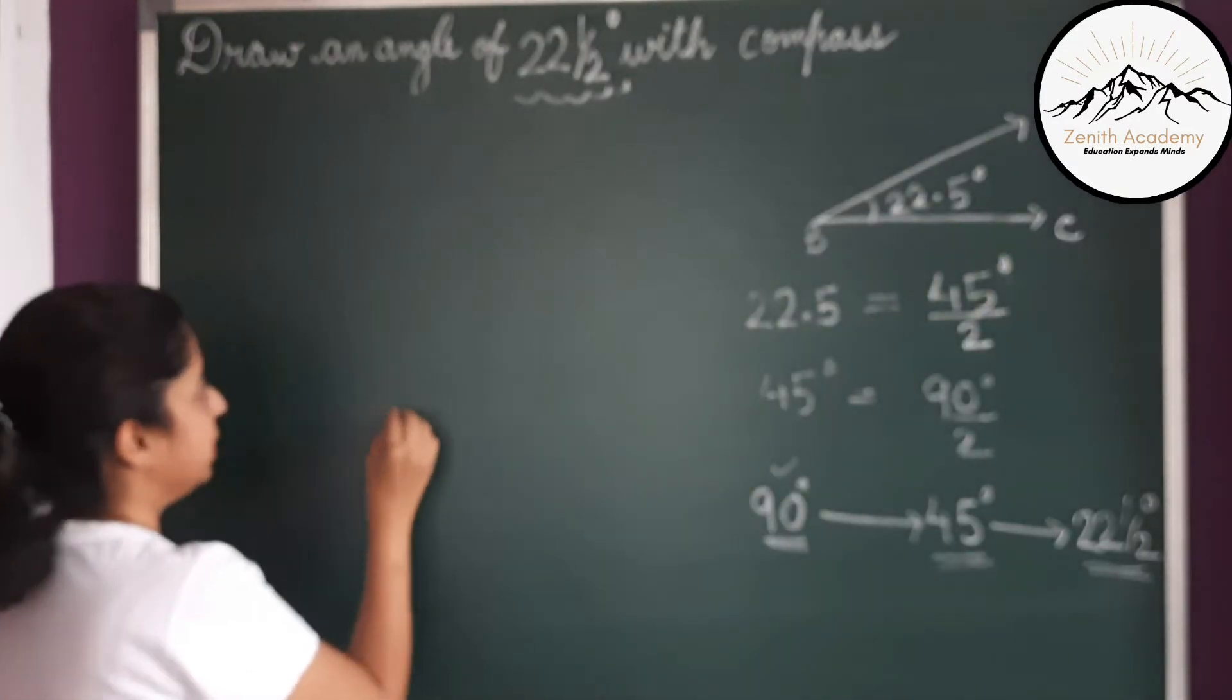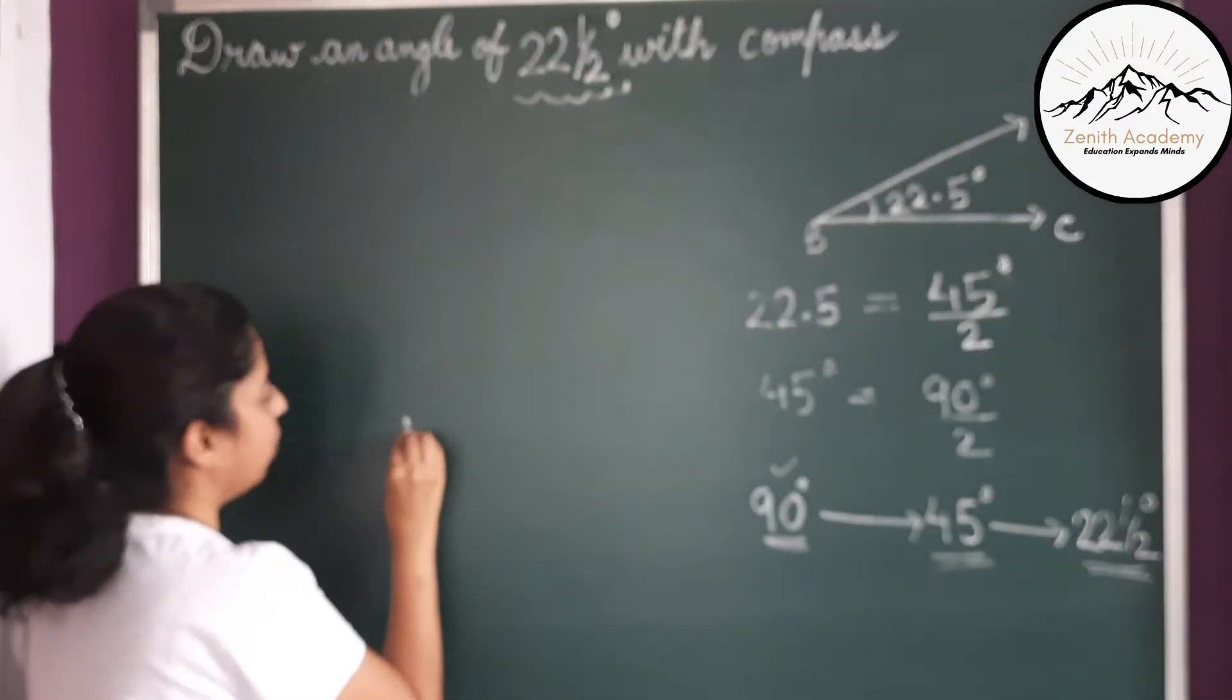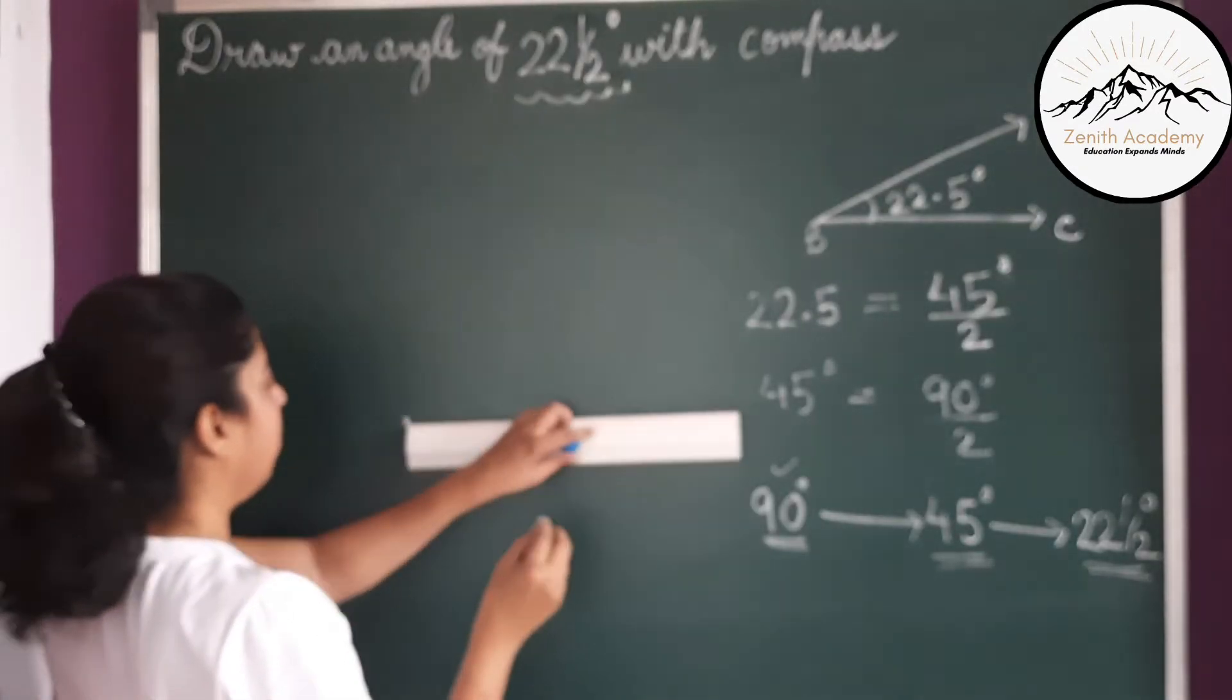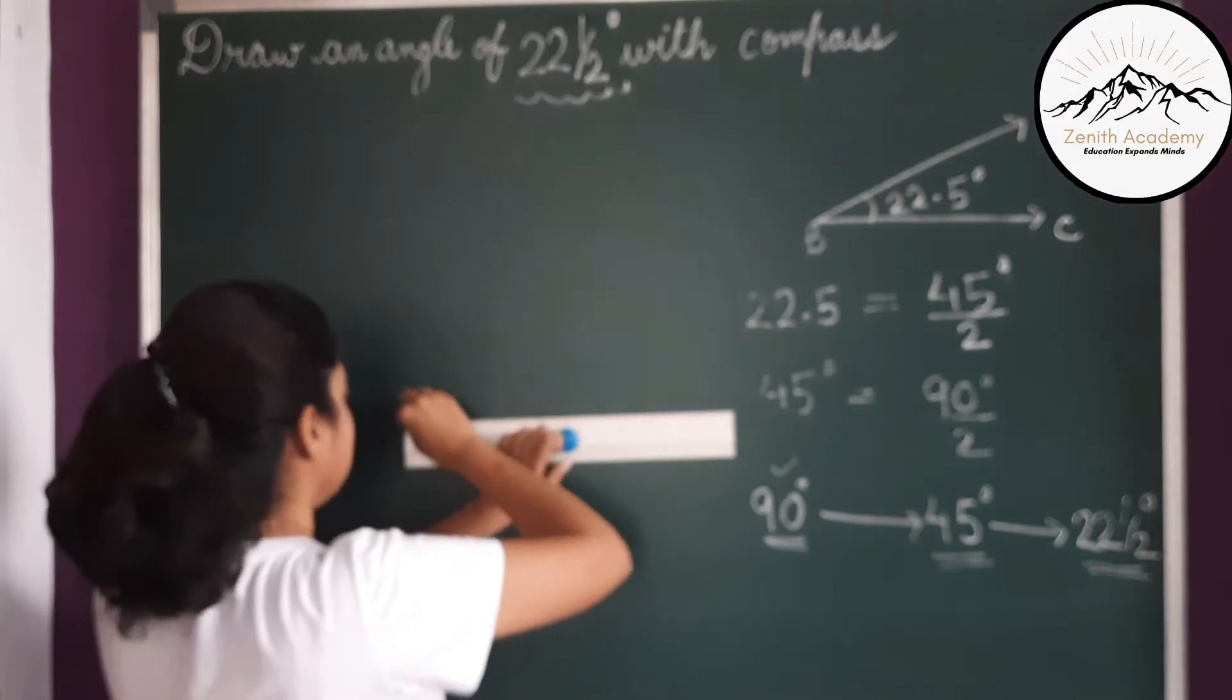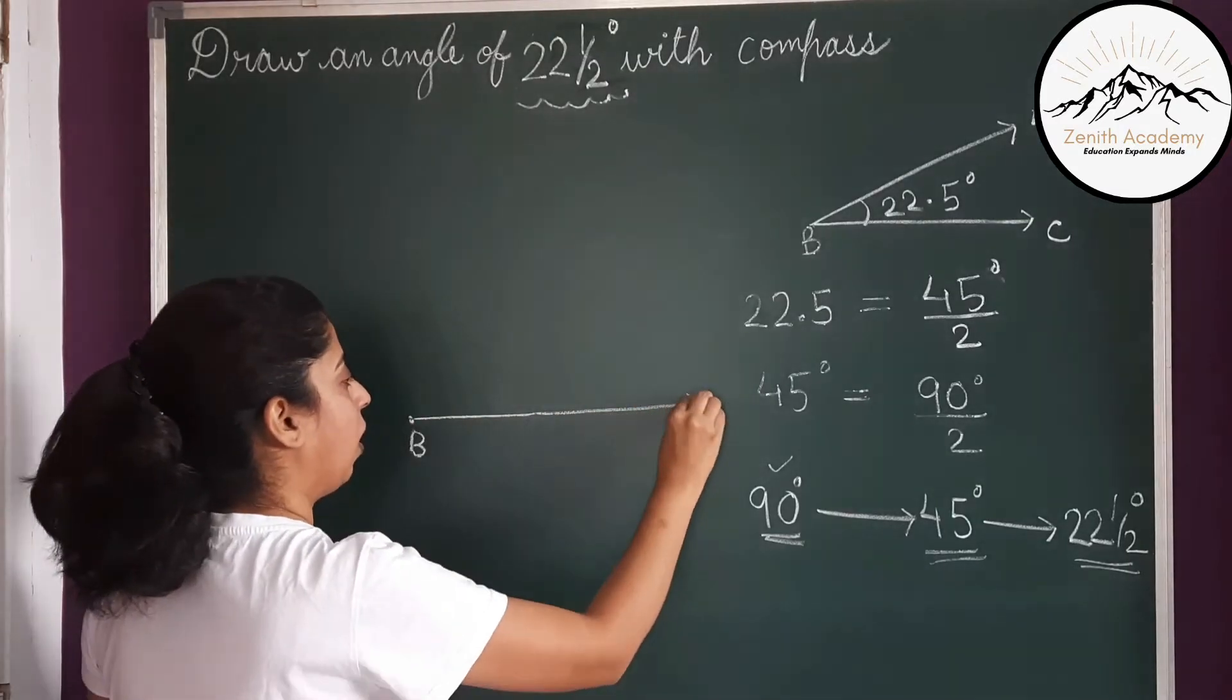For that first we will draw the ray BC. So here I have taken a point B and I have drawn a ray BC.